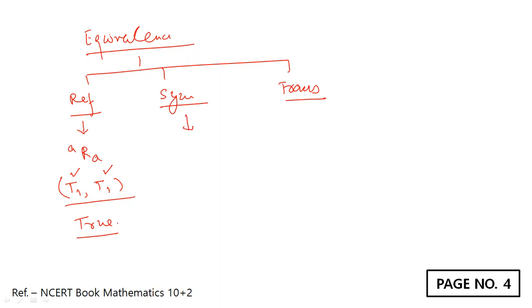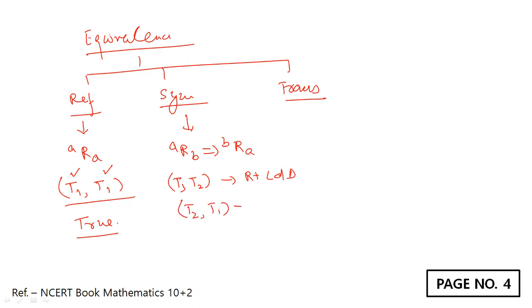What about the second condition — symmetric? If A is in relation to B, then B should be in relation to A. T1 and T2 are both right-angled triangles. Similarly, T2 and T1 are again both right-angled triangles. This means the symmetric condition is also true.